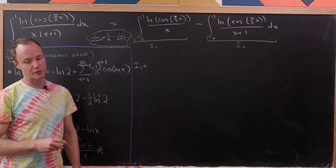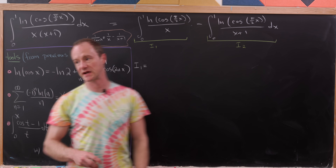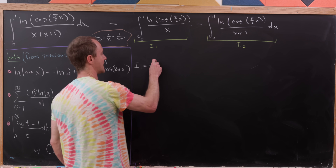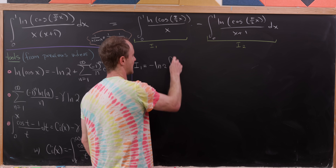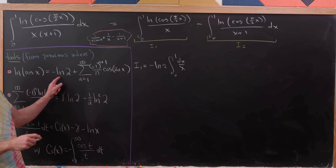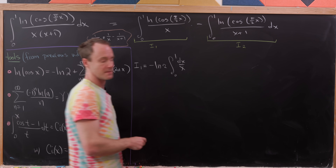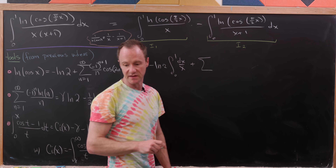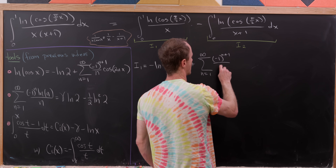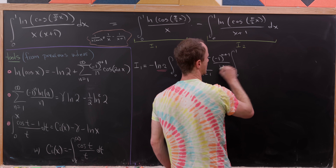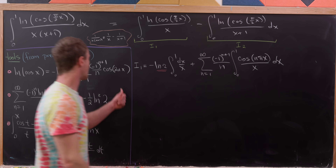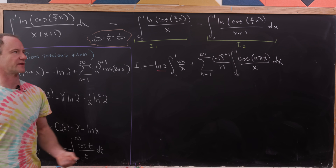For I₁, we take the natural log of cosine term and rewrite it using our first tool. The −ln(2) part gives an integral of (−ln 2)/x over 0 to 1, and the sum part gives, for each n, (−1)^(n+1)/n times the integral from 0 to 1 of cos(nπx)/x dx. Note the factor of 1/2 from π/2 and the 2 in the formula cancel each other.